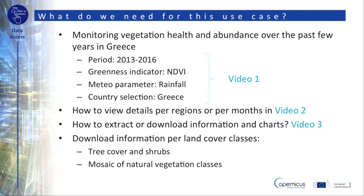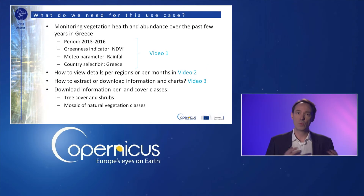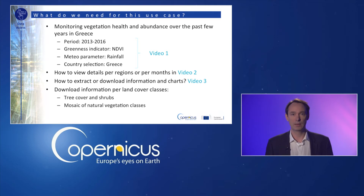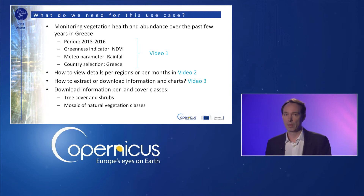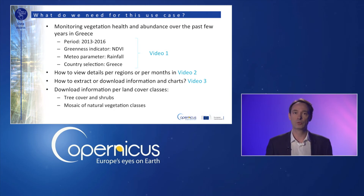Now let's come back to our use case. Imagine we would like to monitor vegetation health and abundance over the past few years in Greece. The first video will show you how and where to select the right parameter for this use case. The second video will show you how to view details per region or per month, and the last video will show you how to extract or download the information.